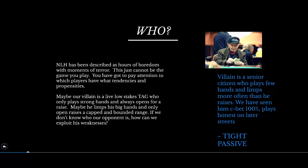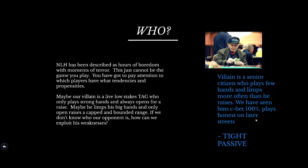Maybe our villain is a live low-stakes tight-aggressive player who only plays strong hands and always opens for a raise. Maybe he limps his big hands and only open-raises a capped range. If we don't know who our opponent is, how can we exploit his weaknesses? In this situation, villain is a senior citizen who plays few hands and limps more often than he raises. We've seen him continuation bet about 100% of the time when he had the opportunity, but he plays honestly on later streets. We think he's tight and passive in general, has an open-limping range, and we've seen him get aggressive in position — so he's probably positionally aware.